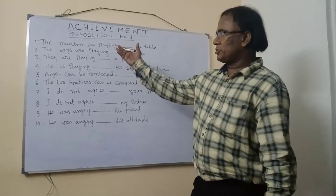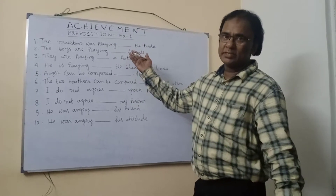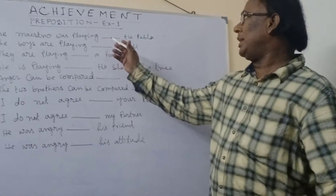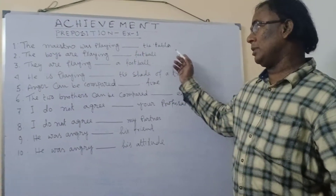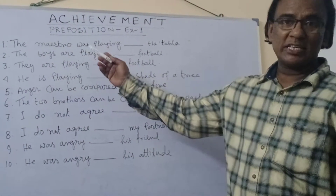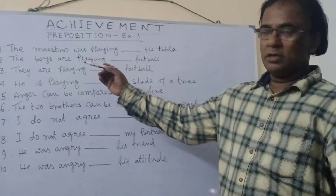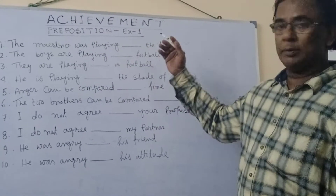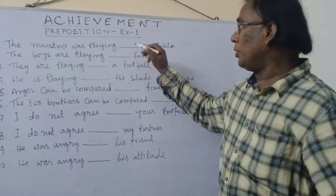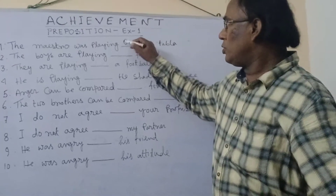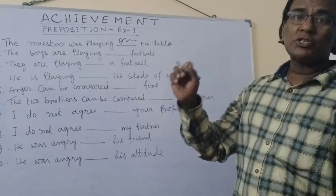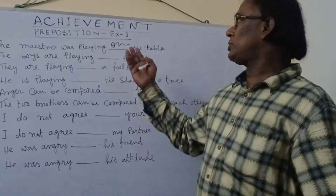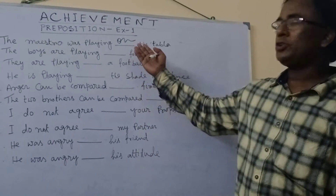Please concentrate on what is written. There are 10 sentences here. First sentence: 'The master was playing on the tabla.' The word master means an expert. So this person is playing the tabla, and the answer will be 'on.' The explanation is: in case of any musical instrument, we have to use the preposition 'on.'